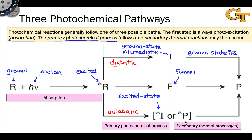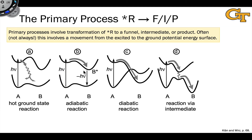Going from the excited intermediate or product to the ground state product can actually involve further primary photochemical processes from that excited state — we're just kicking the can along the road. A funnel or a ground state intermediate may lie in the future of I* or P*. This general picture is very important to keep in mind as we dig into photochemical reactions moving forward, and we're going to come back to it time and again to help us understand and classify photochemical reactions. Now let's dig into the primary process just a little bit — the conversion of excited state R, generated via absorption, to a funnel, an intermediate, or a product possibly in an excited state.